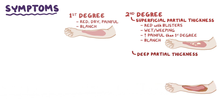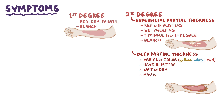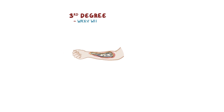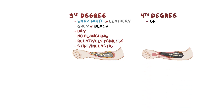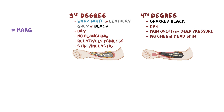A second degree deep partial thickness burn may vary in color from yellow or white to red, have blisters, and can be wet or dry. Because of damage to blood vessels and nerve endings, burns of this degree may not blanch, and there may only be pain due to pressure because of nerve damage. A third degree burn can appear waxy white to leathery gray or black, and dry. Blanching doesn't occur and the pain may only feel like deep pressure — they can be relatively painless. Additionally, the elastin damage causes the burn to be stiff or inelastic. Fourth degree burns are charred black, dry, have pain only from deep pressure but can be painless from complete destruction of nerve endings, and have patches of dead skin. The margins of all burns often have lots of damaged nerve endings, and that can be painful.